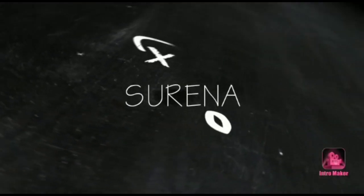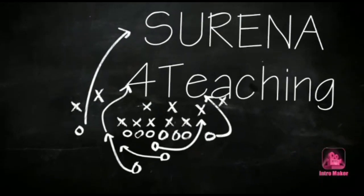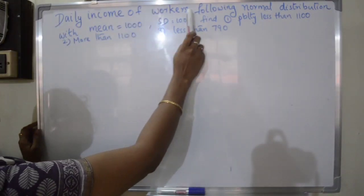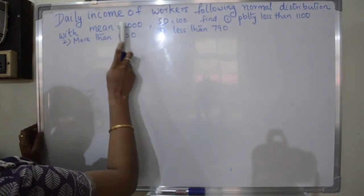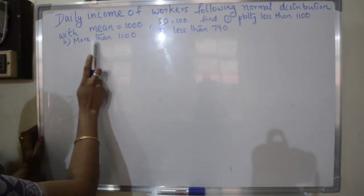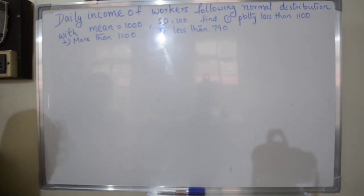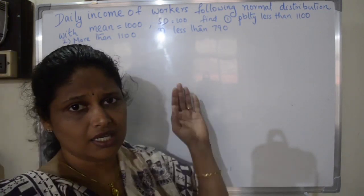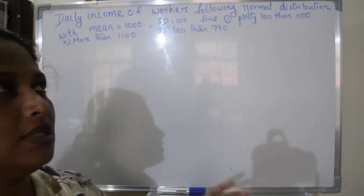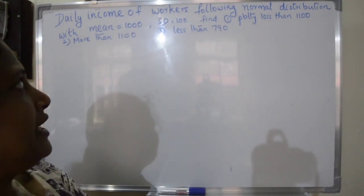The problem states that workers' daily income follows a normal distribution with a mean of 1,000 and a standard deviation of 100. We need to find: the probability of daily income less than 1,100, and the probability of daily income more than 1,100.